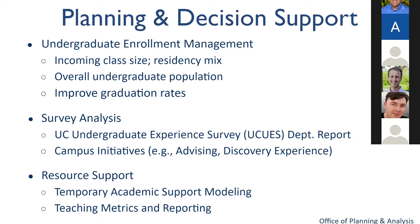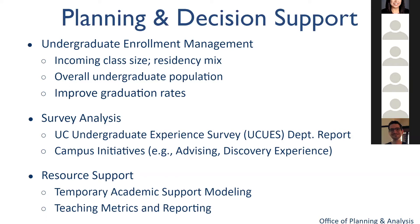Undergraduate enrollment is one area, and we also help project the overall undergraduate population number. As a campus, we're trying to maintain steady state around 30,000 undergrads. We also do analyses around graduation rates and ways to improve them. Another big area is survey analysis work — Beatrice will go into much greater detail on that. We support two surveys: the Undergraduate Experience Survey (UQS) and the Survey of New Students. Analysis from these surveys helps support campus initiatives such as the advising initiative and the Discovery Experience initiative.